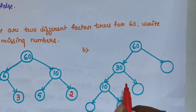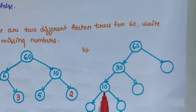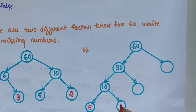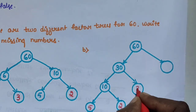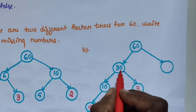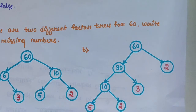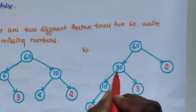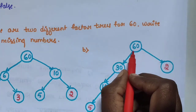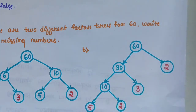Sub-question B: 60 splits into 2 and 30; 30 splits into 10 and 3; 10 = 5 × 2. Working through the factor tree: 5 × 2 = 10, 10 × 3 = 30, 30 × 2 = 60. The missing numbers are 5, 2, 3, and 2.